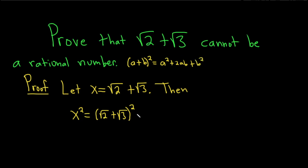So here we'll square √2, it's going to give us 2 plus √2 times √3 times 2. So 2√2√3. Then you square √3, so plus 3. This gives us x² = 5 + 2√6, since √2 times √3 is √6.